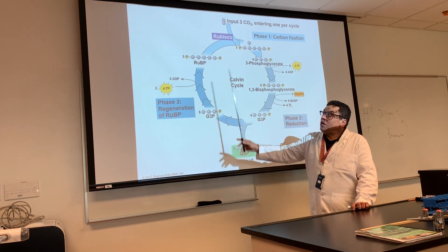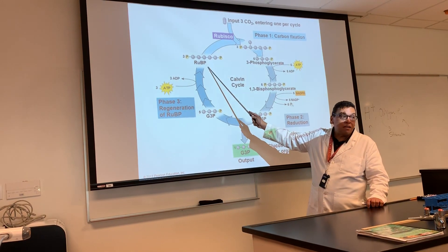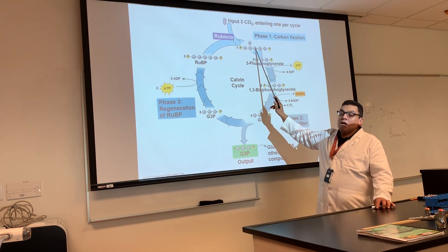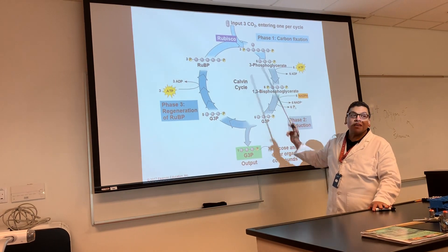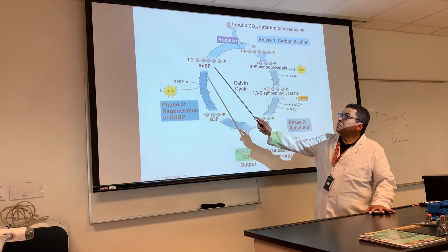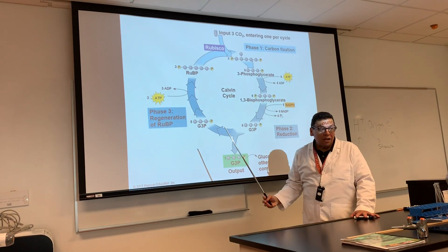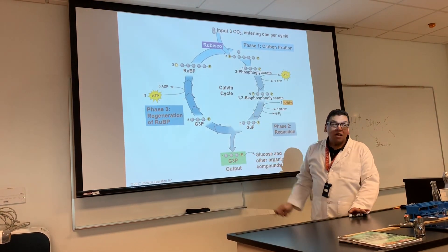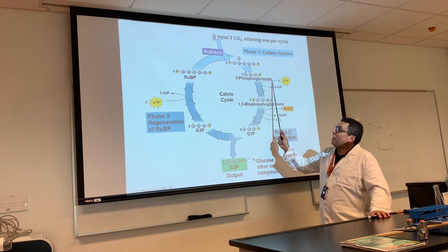The numbering system here is based on three. So we'll do three RuBPs with three CO2 molecules to make three six-carbon molecules, but all three of them will break and make six. This molecule is called 3PG — 3-phosphoglycerate.